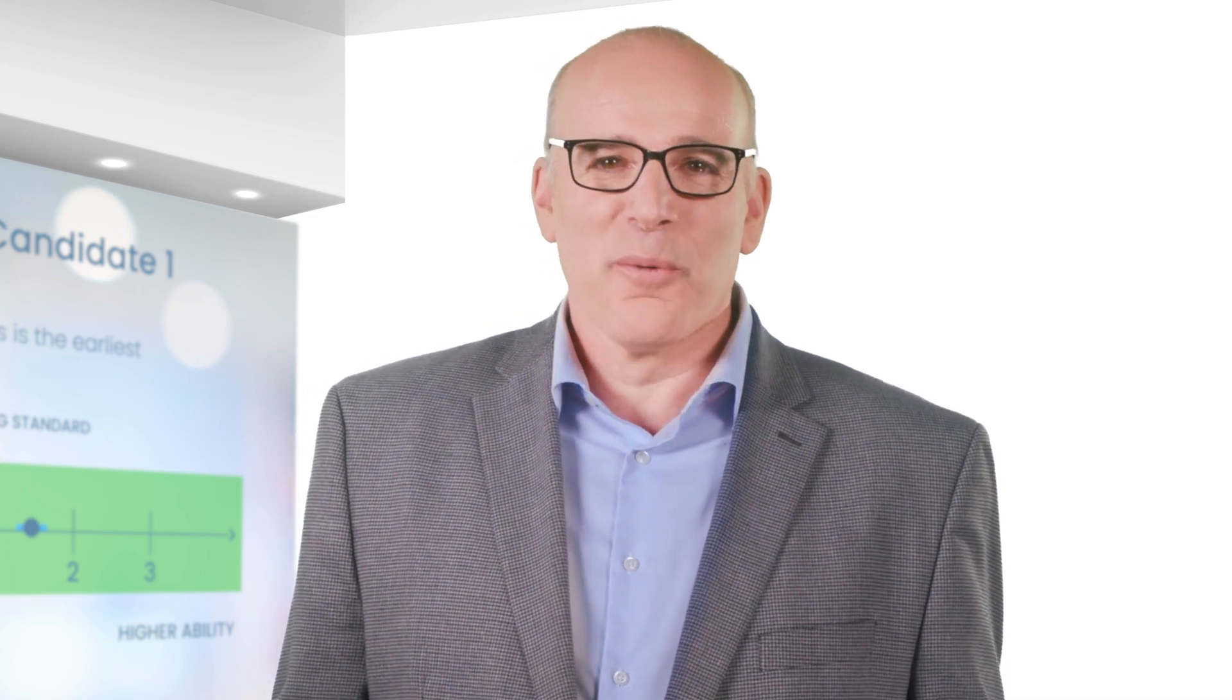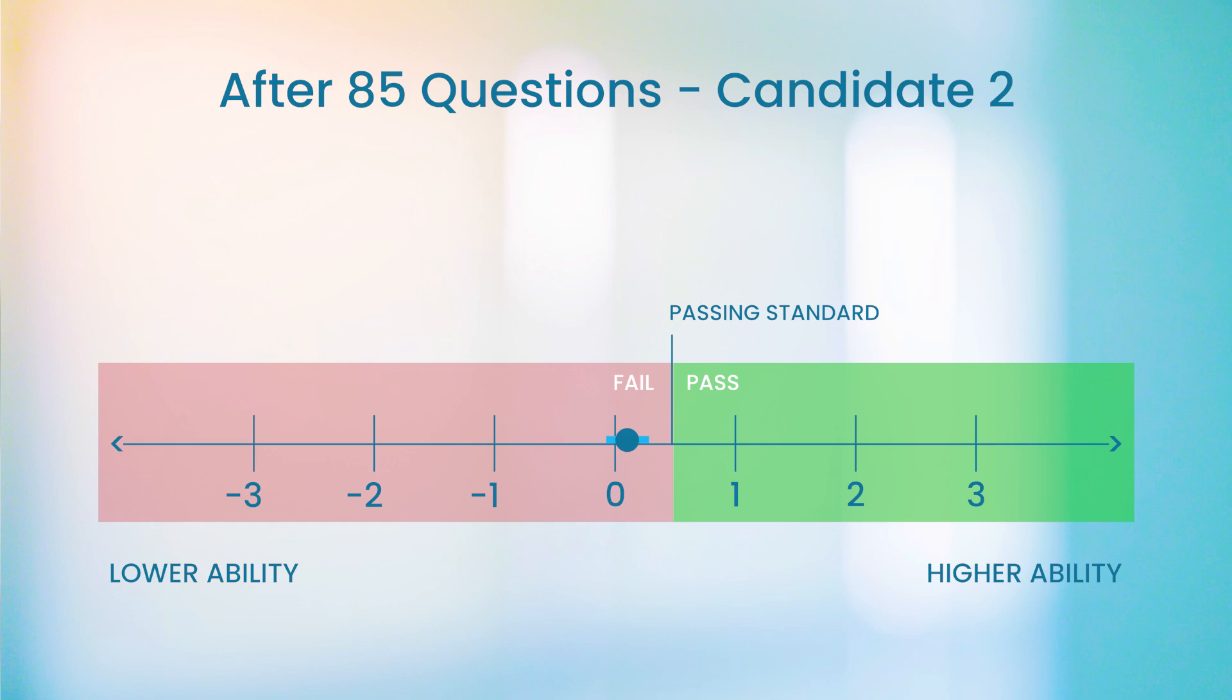Of course, other results are possible as well. Let's look at a different candidate's graph after 85 questions. Here again, the ability estimate is very precise and clearly below 0.5, even accounting for any uncertainty. This candidate fails the exam with what's known as a minimum length fail.